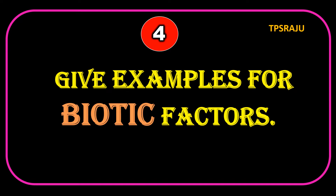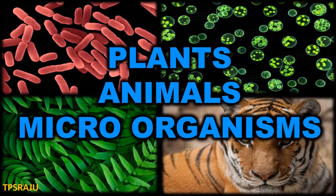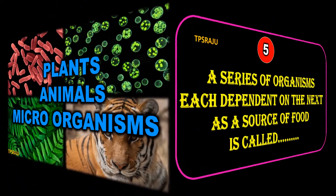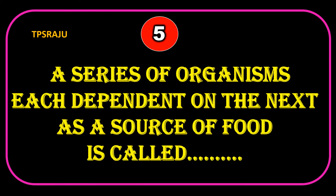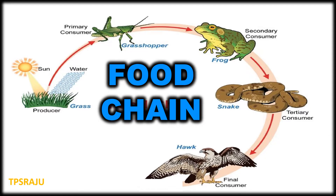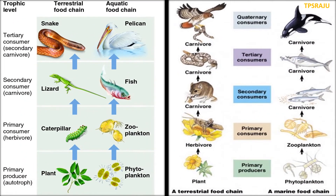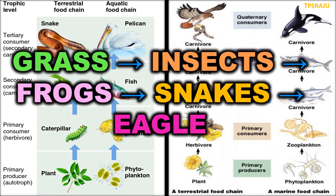Give examples for biotic factors: plants, animals, and microorganisms. A series of organisms each dependent on the next as a source of food is called a food chain. Example for food chain: grass → insects → frogs → snakes → eagle.